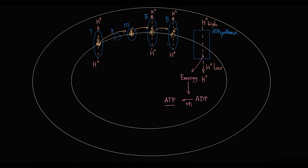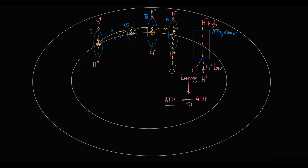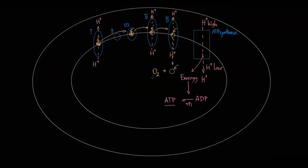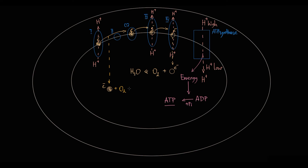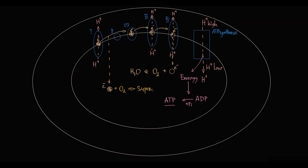After complex 4 extracts the last portion of energy from an electron, the now low-energy electron is thrown out to oxygen inside the mitochondrial matrix, reducing oxygen to form water. However, even under normal conditions, the electron transport chain is not perfect, and some electrons leak out and instead reduce oxygen to form superoxide — a reactive oxygen species. When N-acetylbenzoquinonimine binds to proteins in the electron transport chain, it increases the amount of electrons that leak out, thereby increasing superoxide production.